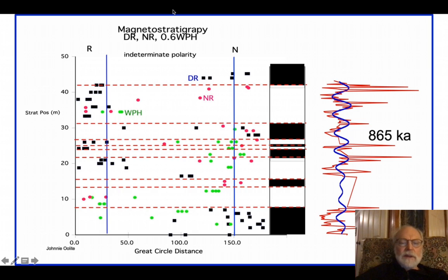I went to three localities of the Rainstorm member of the Johnny Formation, two in Death Valley, two in the Desert Range north of Las Vegas, and I developed, I measured a magnetostratigraphy and a magnetic susceptibility rock magnetic cyclostratigraphy at each locality, and then I could tie them together by the marker bed